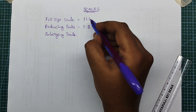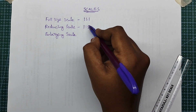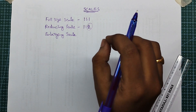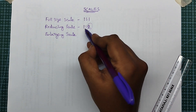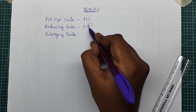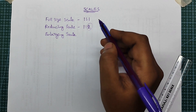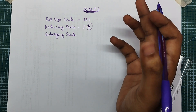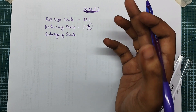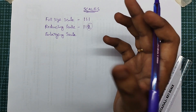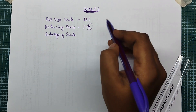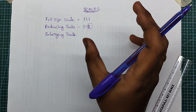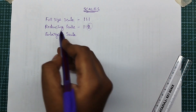We use small size scale, meaning the drawing is smaller than the actual object. For example, a ratio of 1 to 100 means you change the value in every dimension by 100. This is reducing scale.